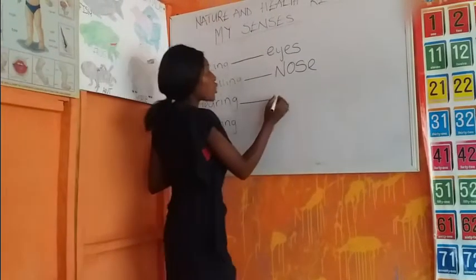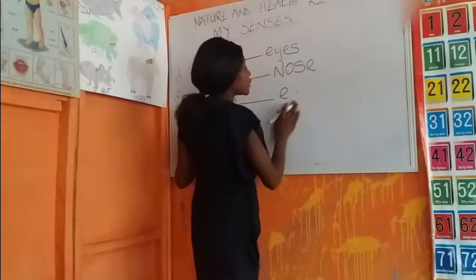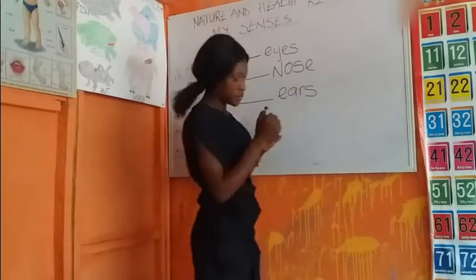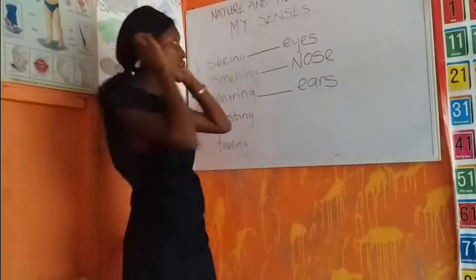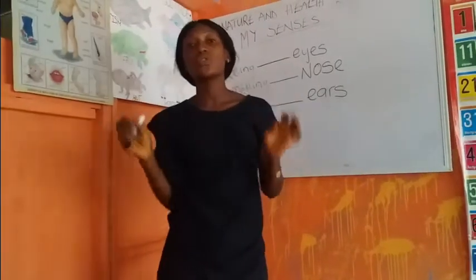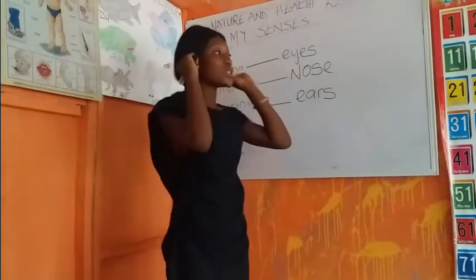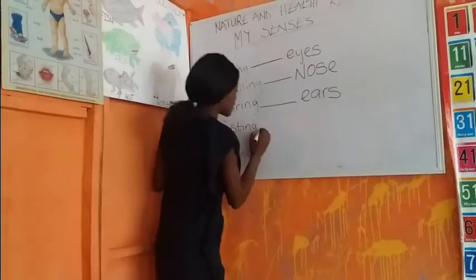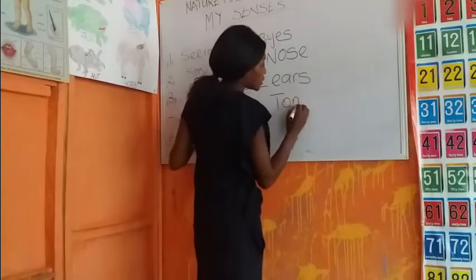The next sense is the sense of hearing, and the organ for that is the ears. These are my ears, and you use your ears for hearing. You can hear me talking because you have your ears — without your ears you won't be able to hear me. The ears are used for hearing.